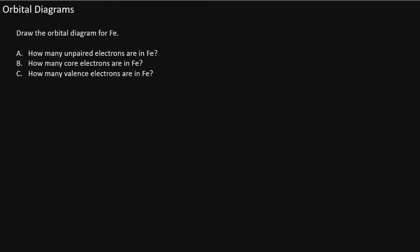In this problem we'll draw an orbital diagram for iron. Now before we draw the orbital diagram we must first write the configuration. Let's pay a visit to the periodic table.